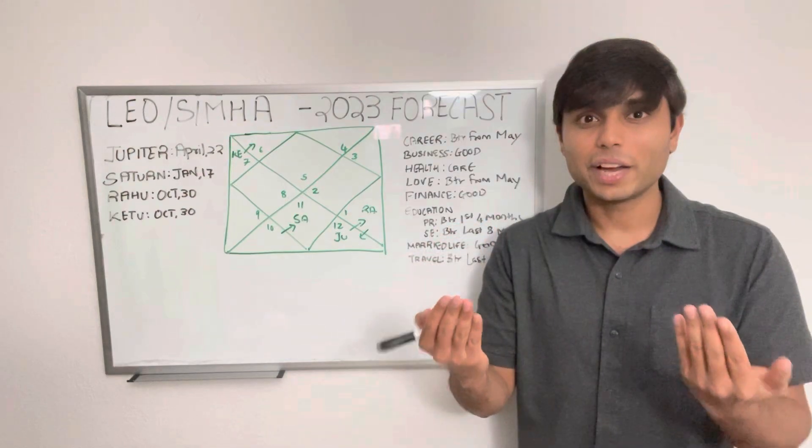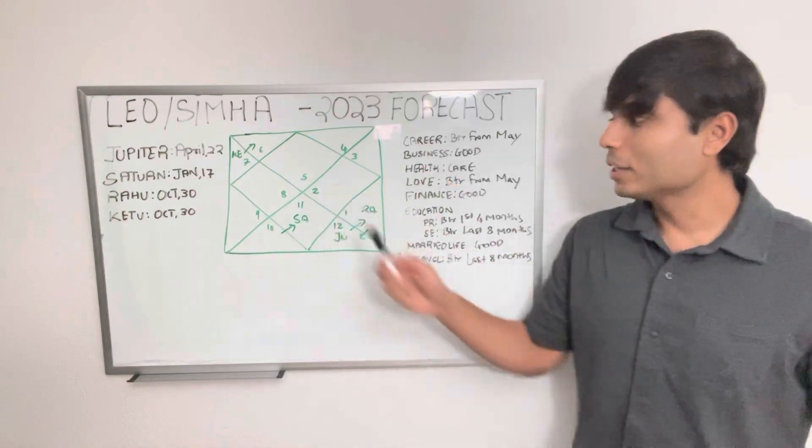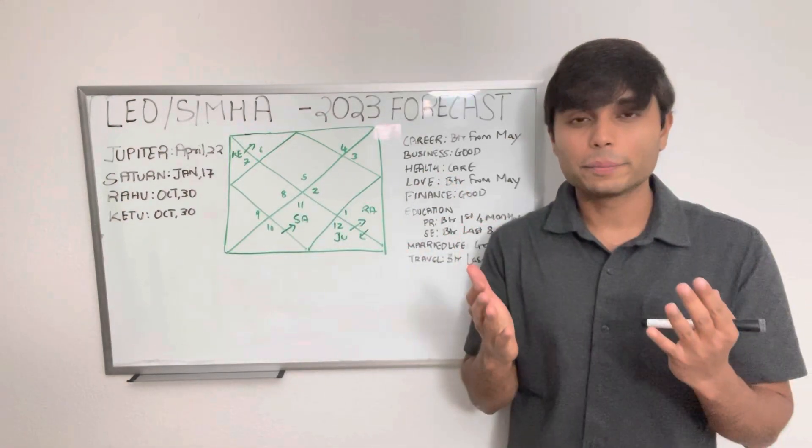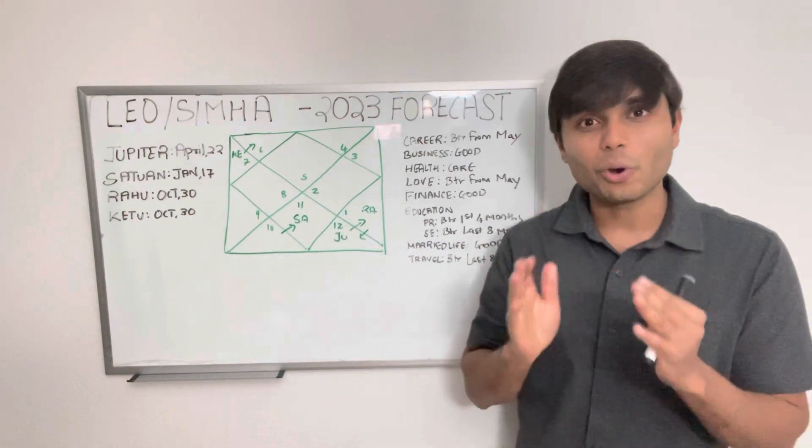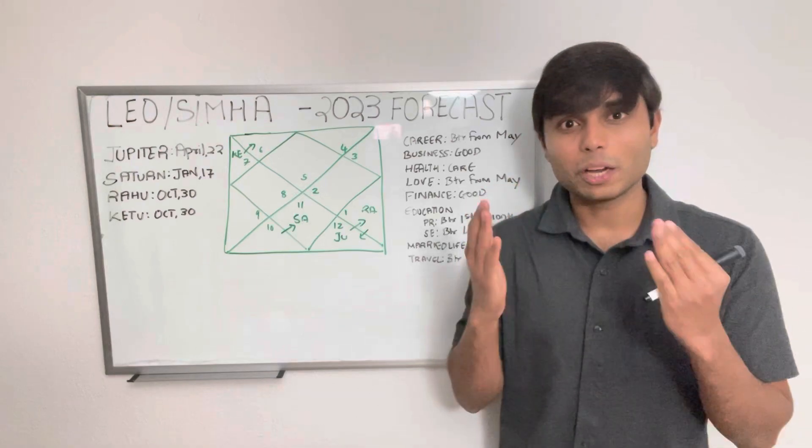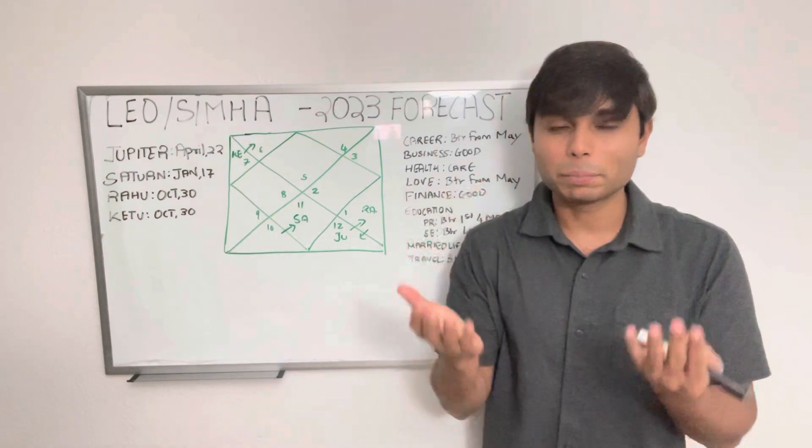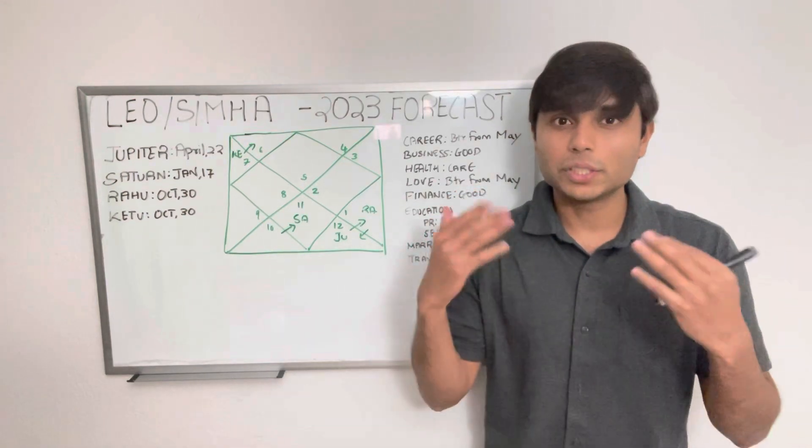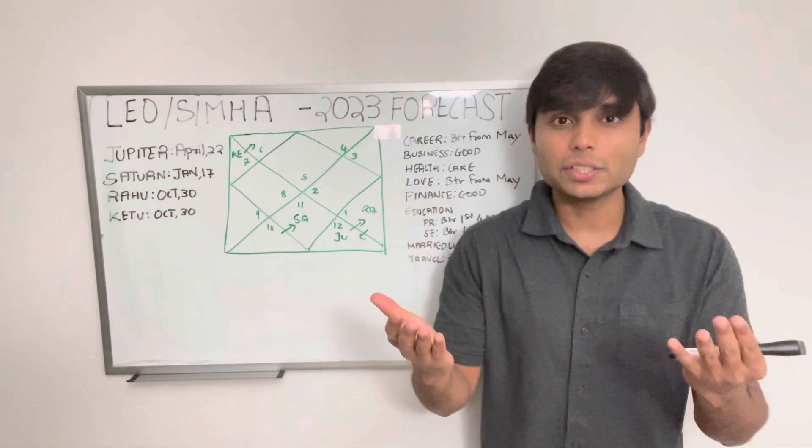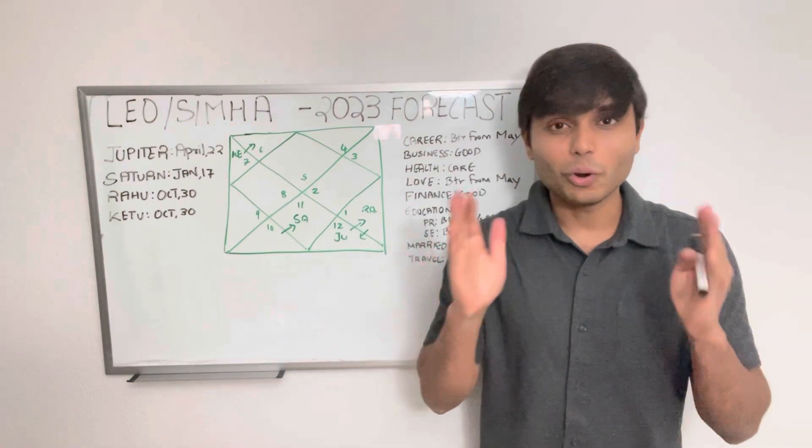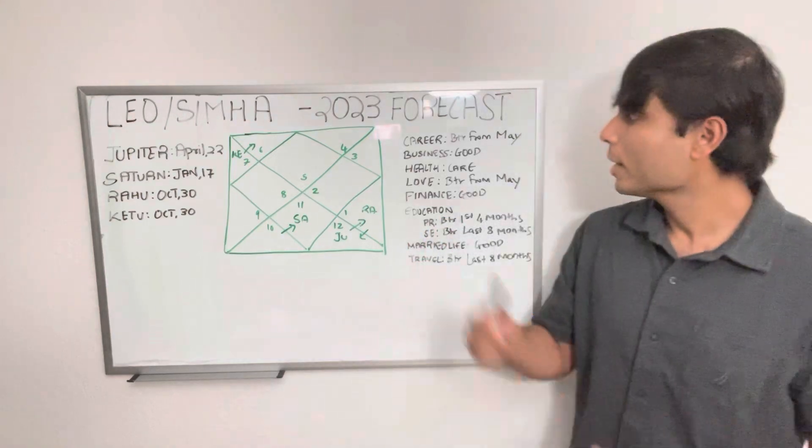If you look at business, then things are looking to be excellent throughout the year because finally the lord of your business house, Saturn, will be strongly placed in your seventh house all year long. So whether it is starting a new business, thinking of business expansion, getting into a business partnership, or implementing any new business marketing strategies and ideas, the whole year is looking to be very supportive for the same.